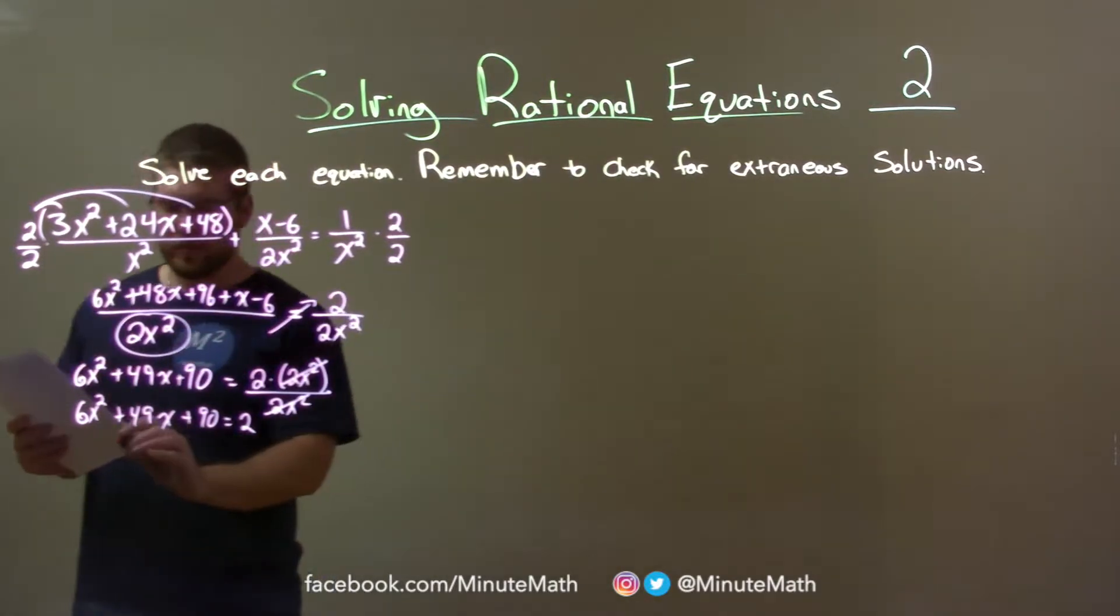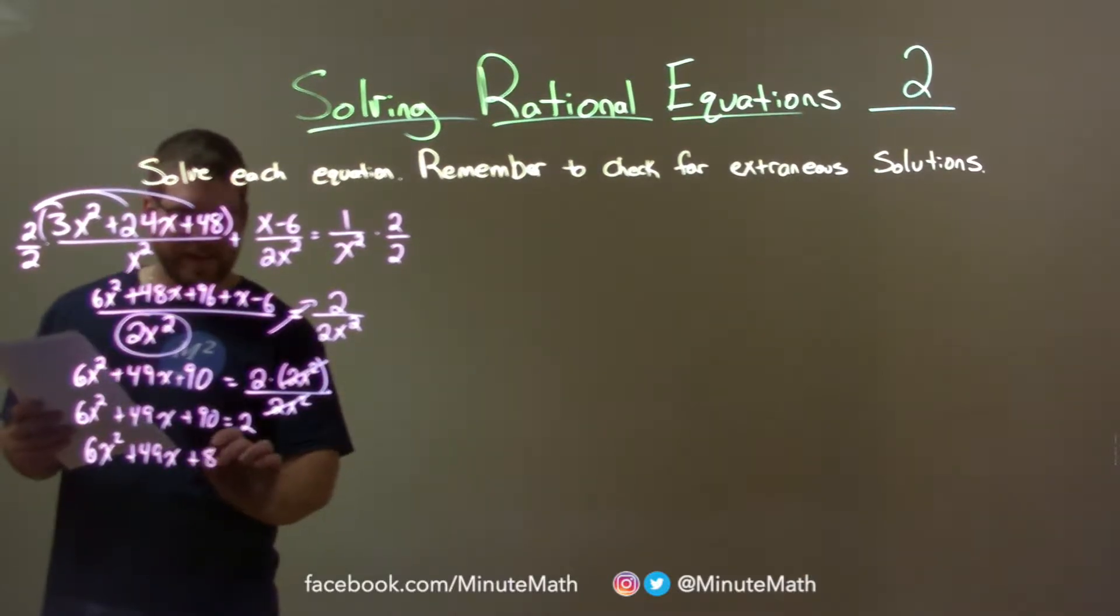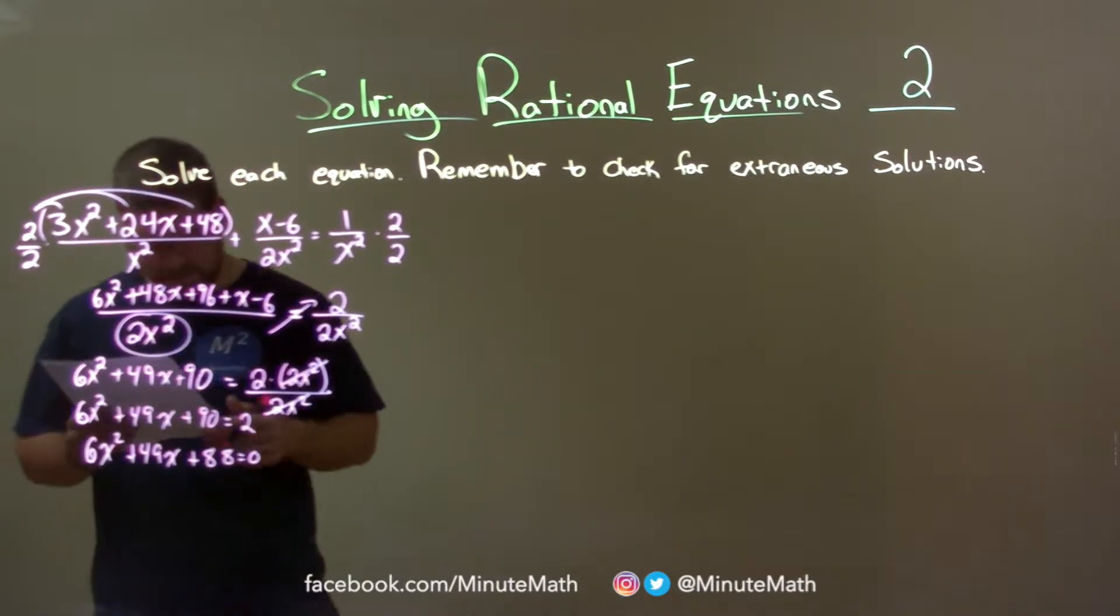So now we have 6x squared plus 49x plus 90 equals 2. Subtract 2 from both sides, and we have 6x squared plus 49x plus 88 equals 0.